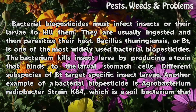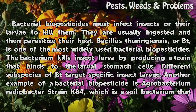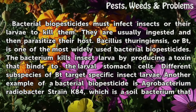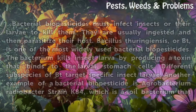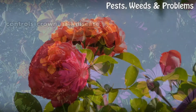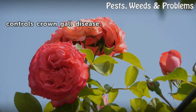Different subspecies of Bt target specific insect larvae. Another example of a bacterial biopesticide is Agrobacterium radiobacter strain K84, which is a soil bacterium that controls crown gall disease.